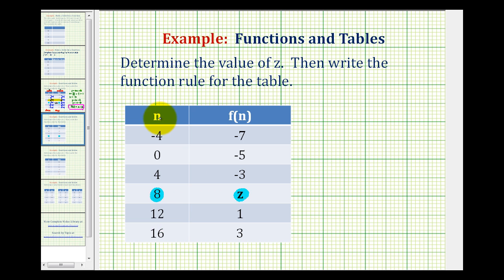So for this table, these values of n would be the inputs into the function, which would also be the domain of the function. And then the second column, f of n, would be the outputs of the function, which would also be the range of the function.